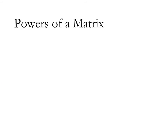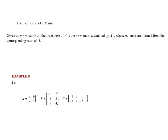We can also raise matrices to powers. A to the kth power is A times A times... times A, k times. However, A must be an n by n square matrix for this to work — a non-square matrix like 3 by 4 can't be squared since that product is not defined.